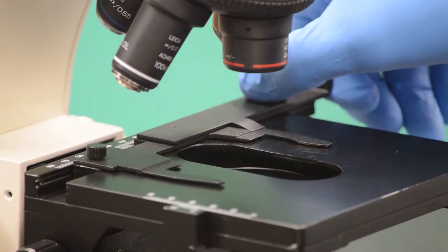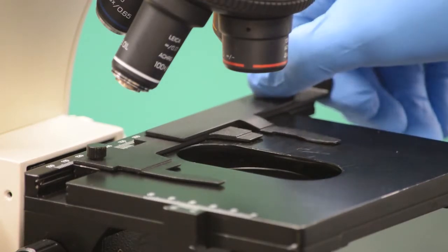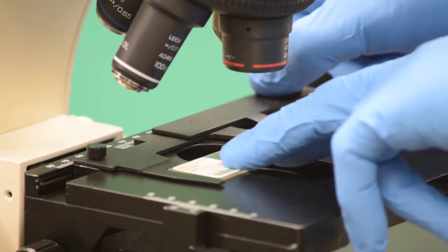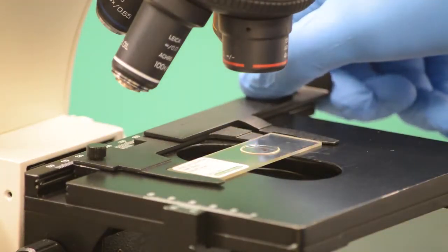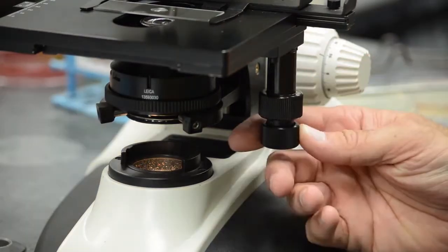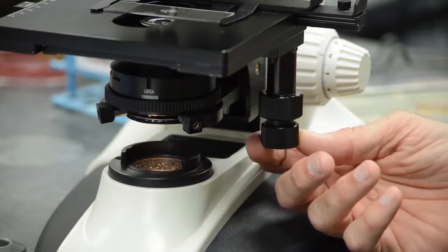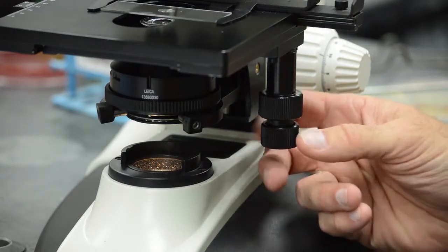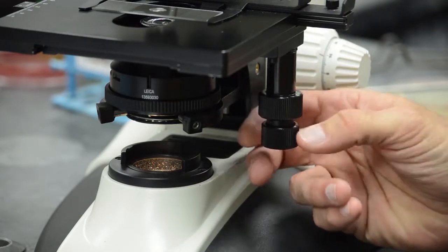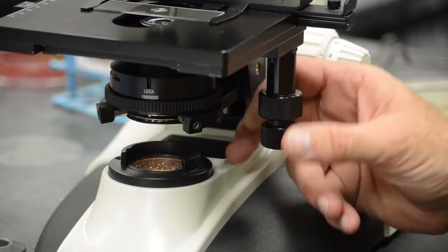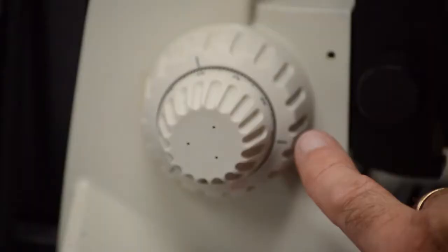The stage is where the slide with the sample is placed for observation. The stage normally has clips that hold the slide in place. Also, there are movement controls on the side of the stage that move the stage right to left and forward and backward. This helps position the material in the center of the area of view. These controls are moved by rotating knobs below the stage.